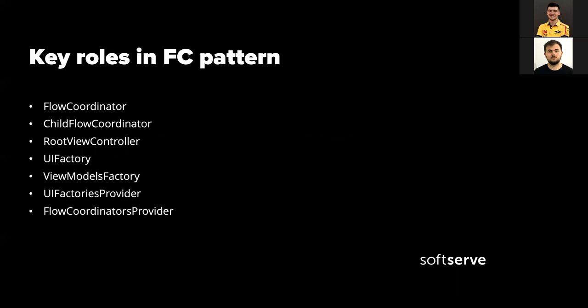Here are a few key roles in the FC pattern. At the top of the list is the flow coordinator itself — a class responsible for managing the app's flow. It can be divided into sub-flows, called child flow coordinators. Inside each flow coordinator we always have a root view controller, which is the view controller being presented at the current time. We also have additional classes: a UI factory for returning view controller instances, a view models factory for returning view models, and two providers for UI factories and flow coordinators.